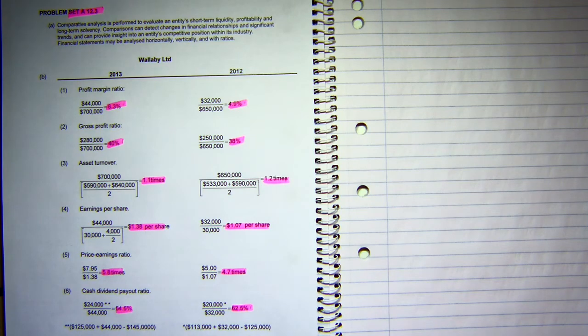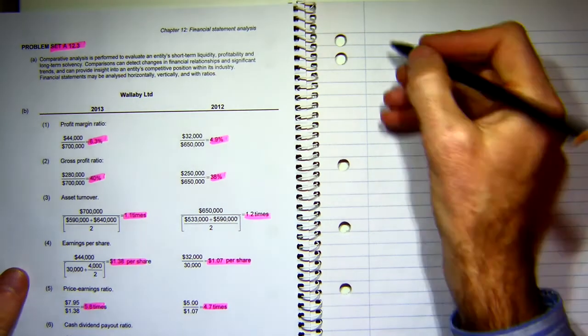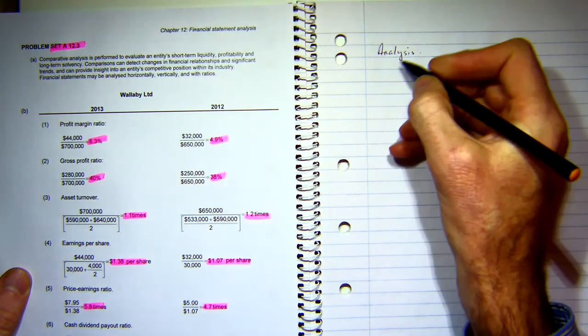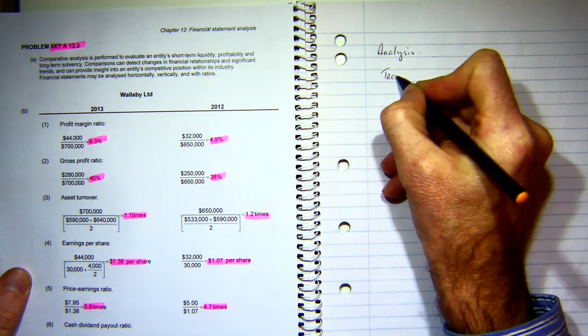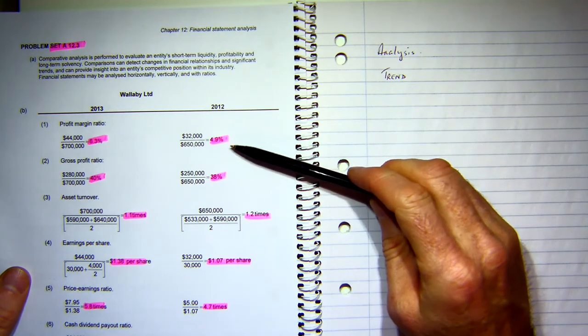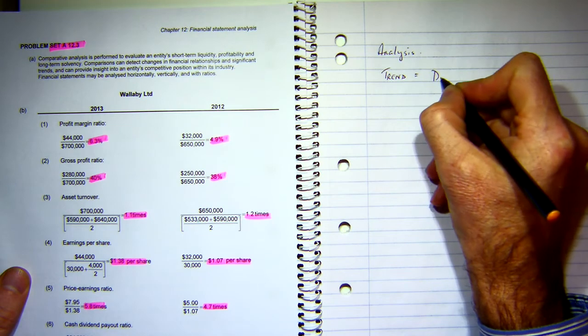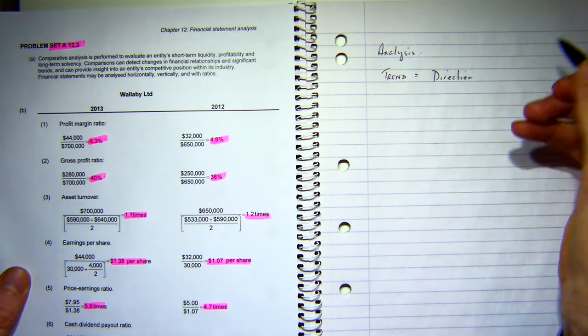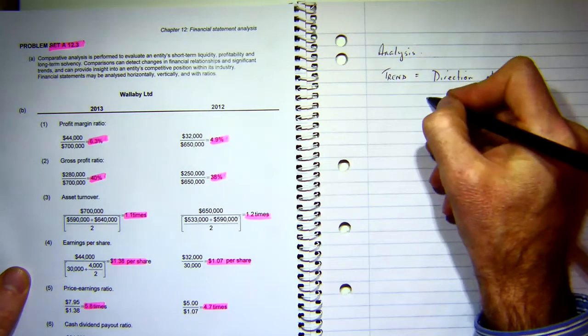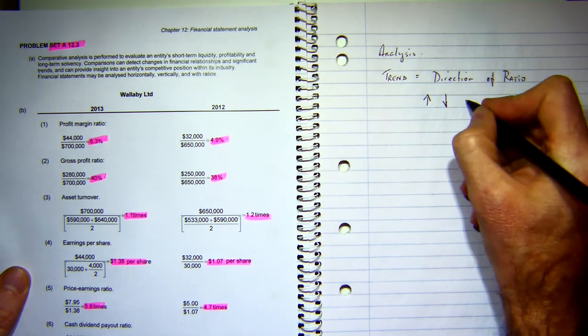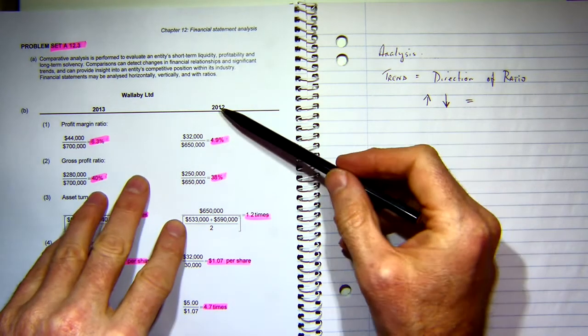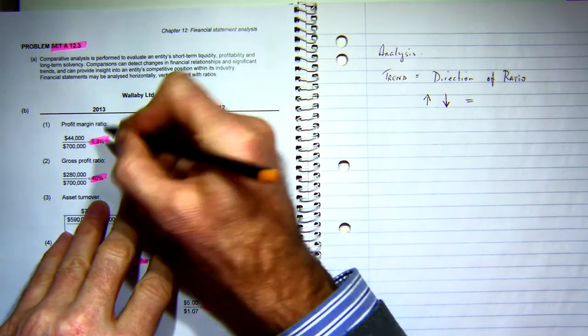First things first, how do we do analysis? Analysis is conducted in two ways. Trend is the first one - direction of the ratio. The trend can only go three ways: it can increase, decrease, or stay the same. Now if we look at this profit margin from 2012 to 2013, my profit margin has increased.